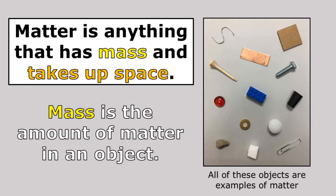Matter is anything that has mass and takes up space, so all of the objects that you see here are examples of matter. And mass is the amount of matter in an object. So when we measure an object's mass, we're measuring how much matter is in the object.